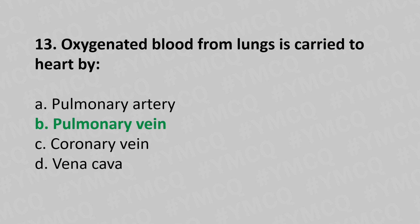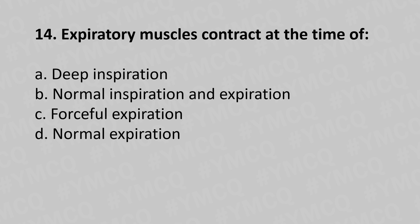Now let's move to question number fourteen. Expiratory muscles contract at the time of: option a, deep inspiration; option b, normal inspiration and expiration; option c, forceful expiration; option d, normal expiration. And the answer is option c, forceful expiration.